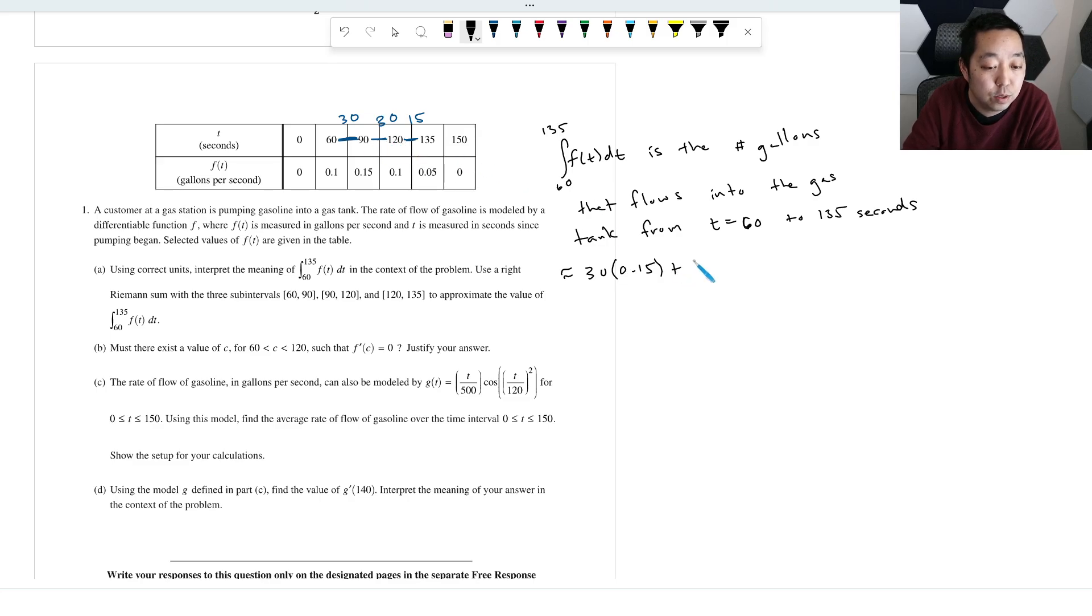Plus the width of this interval, or the width of the rectangle times this height here on that interval would be 0.1. And then the interval width is 15, and the height is going to be, the right point of that interval is 0.05. And so that's going to be 30 times 0.15, plus 30 times 0.1, plus 15 times 0.05, you get 8.25 gallons.